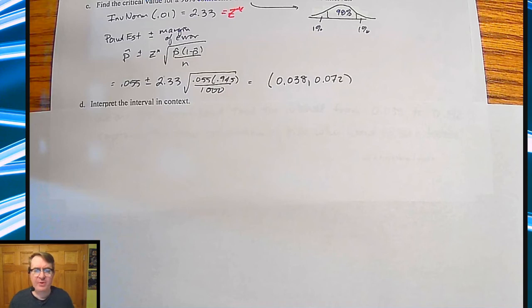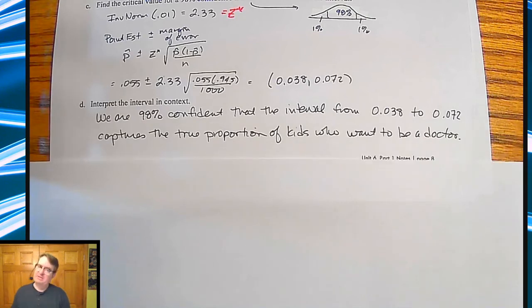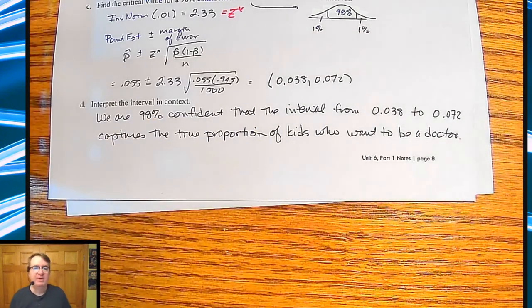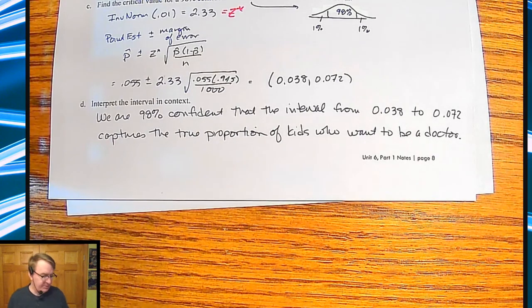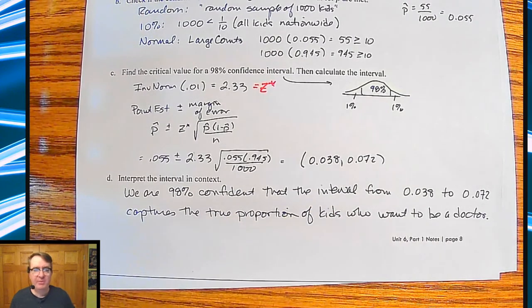Anyway, to interpret this, we would say something, and again, this isn't anything new. We've been doing this now for three sections. We are 98% confident that the interval from 0.038 to 0.072 captures the true proportion of kids who want to be a doctor. And if you're still having a hard time with the 98% confident part, just remember to go back, take a look at some of the other videos so that hopefully that will get, with a little bit of time and space from it, hopefully hearing it again would be helpful.